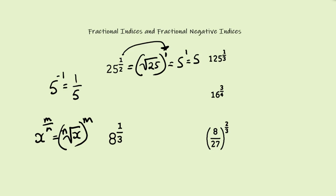Let's look at the next example: 8 to the power of one third. The 3 goes outside as the root, so we have the cube root of 8, and the 1 goes outside the brackets as a power. Cube root of 8 is 2, and 2 to the power of 1 is just 2.